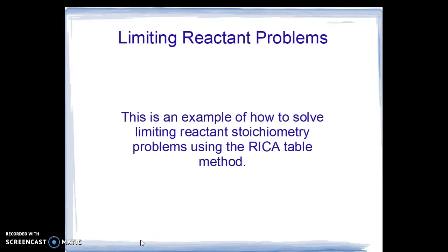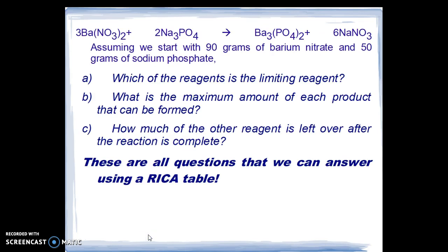Let's learn a useful method to solve limiting reactant problems. This is an example of how to solve limiting reactant stoichiometry problems using what we call the RICA table method. We will use the reaction between barium nitrate and sodium phosphate, generating barium phosphate and sodium nitrate. This is an ion swap and should produce a barium phosphate precipitate.